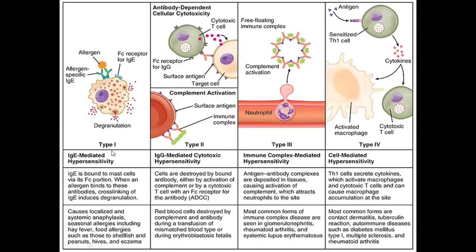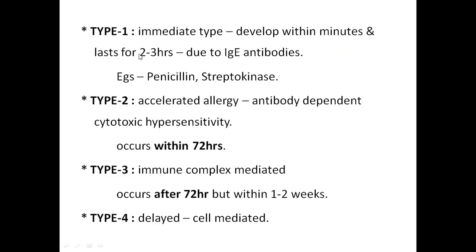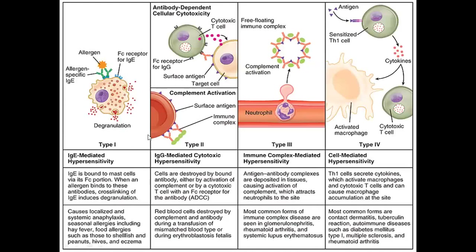There are four types of hypersensitivity reactions. Type 1 is immediate IgE-mediated hypersensitivity. It develops within minutes and lasts two to three hours due to IgE antibodies. The allergen, which is the drug, binds with the IgE antibody, which degranulates mast cells. From these mast cells, inflammatory and allergic mediators are released, producing hypersensitivity reactions. Examples include seasonal allergies and food allergies.